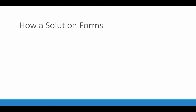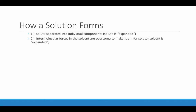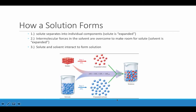Let's consider how a solution forms. I've broken the process into a series of three steps, though these steps generally occur simultaneously. First, the solute must be separated into its individual components — this is often referred to as the expansion of the solute. Then, intermolecular forces in the solvent must be overcome to make room for the solute — this is the expansion of the solvent. Finally, the solute and the solvent must interact to form the solution.